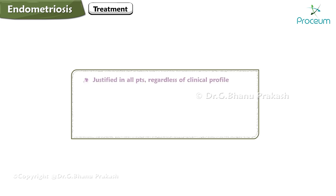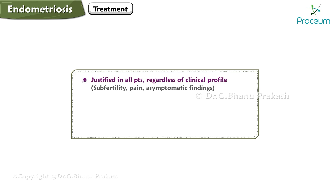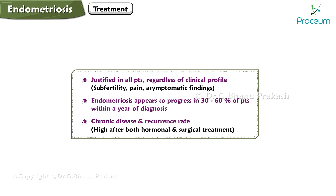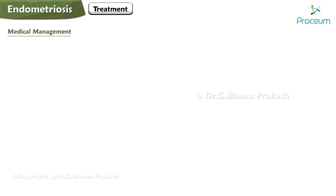Treatment of endometriosis is justified in all patients regardless of clinical profile — whether subfertility, pain, or asymptomatic findings — because endometriosis appears to progress in 30 to 60 percent of patients within a year of diagnosis. It is a chronic disease with a high recurrence rate after both hormonal and surgical treatment.